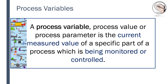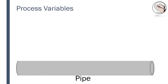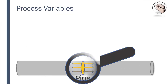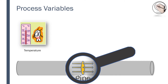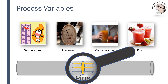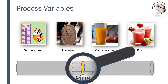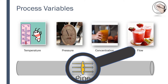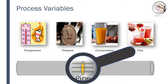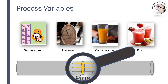If you were to look at a pipe and the contents flowing through a particular point, you can measure temperature, pressure, concentration, and the flow of the contents. If there is a reaction happening within the pipe, you can measure percent conversion. These variables are known as process variables.